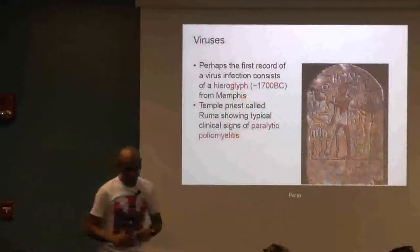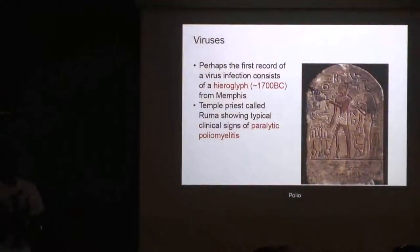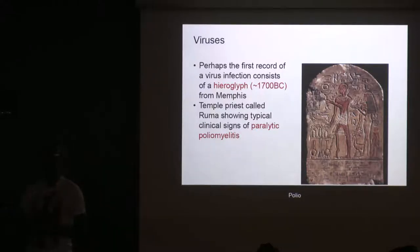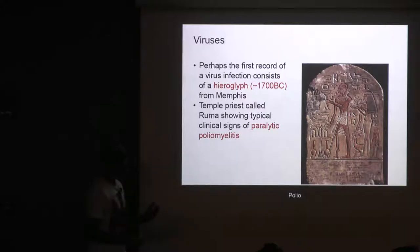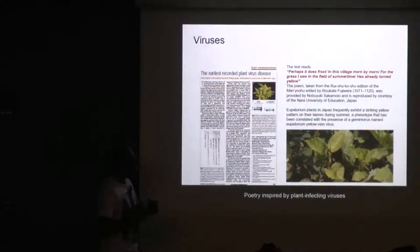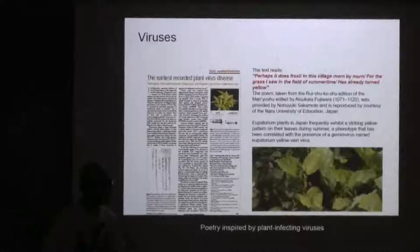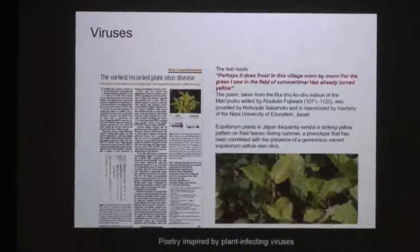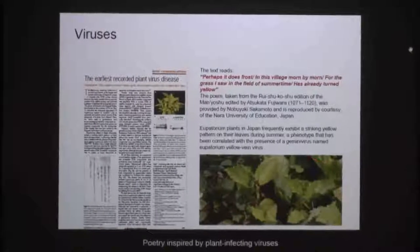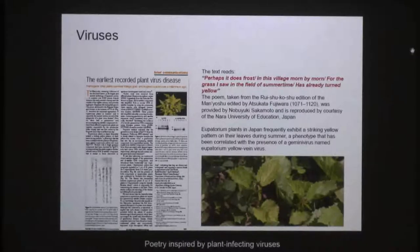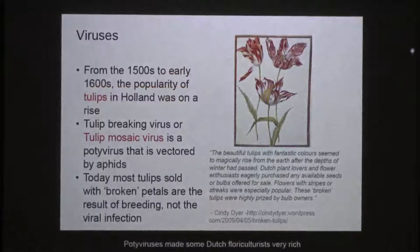If you think about viruses, we do know a lot about viruses, but we know very little about the viruses that we know about, in the sense that historically people have been depicting diseases caused by viruses well before we even imagined viruses existed. 1700 BC classical hieroglyphics show poliomyelitis symptoms. Viruses have also inspired poets — here's a poem written in Japan about a thousand years ago describing a Gemini virus causing vein-clearing symptoms and yellowing of the veins.